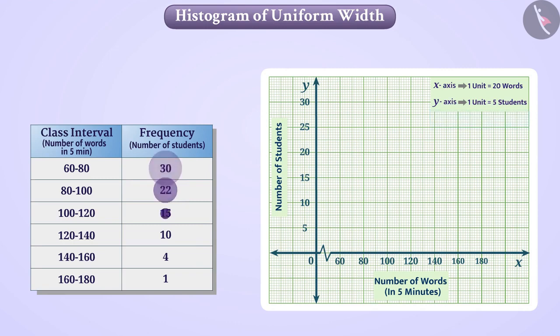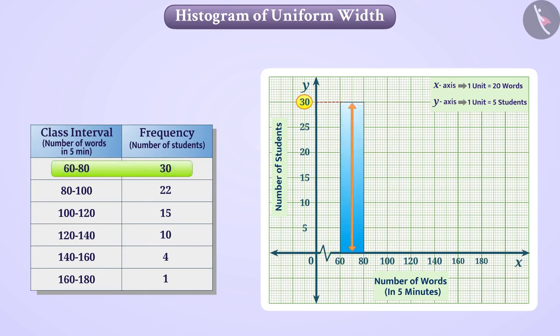The frequency of class interval 60 to 80 is 30, so we will draw a rectangle for this class interval in such a way that the length will represent 30 students. Similarly, we will also draw rectangles for other class intervals.